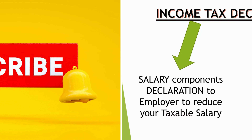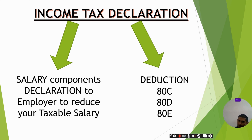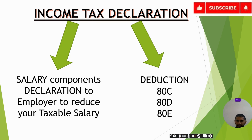Let's start regarding income tax declaration — how to do it, what is the procedure, what are the components, and how you can save some tax. Basically, income tax declaration has two parts: first, you have to exclude a few components from your taxable income from your salary; and second, you have to show some deductions like 80C, 80D, and 80E.